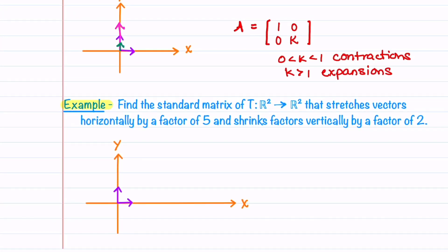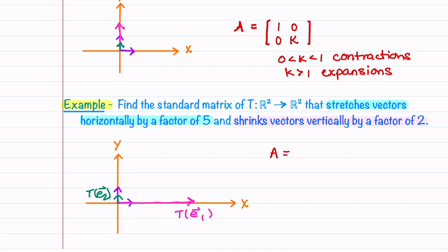Let's look at an example. We'll find the standard matrix of a transformation that stretches vectors horizontally by a factor of 5 and shrinks vectors vertically by a factor of 2. E1 stretches by a factor of 5 and E2 shrinks by a factor of 1/2. This gives a standard matrix of [[5, 0], [0, 1/2]].